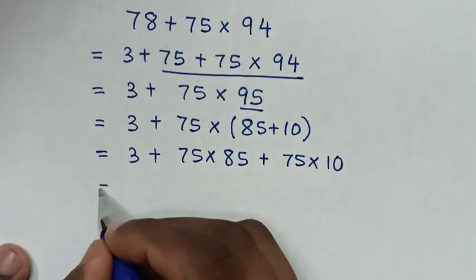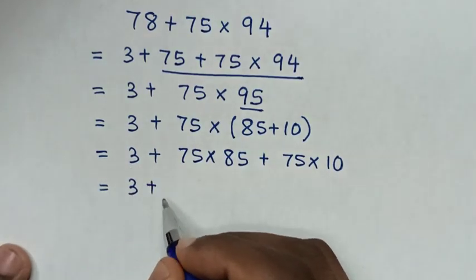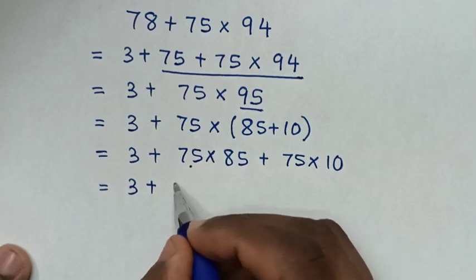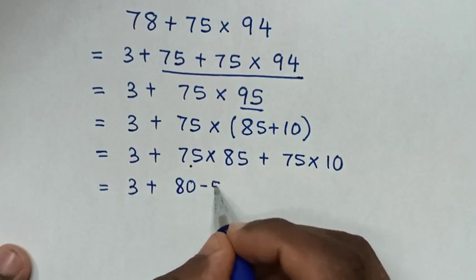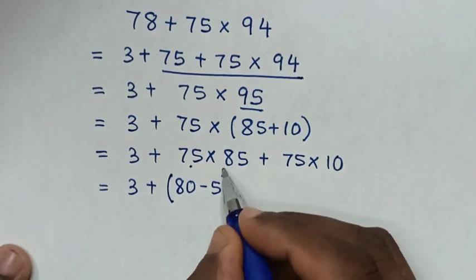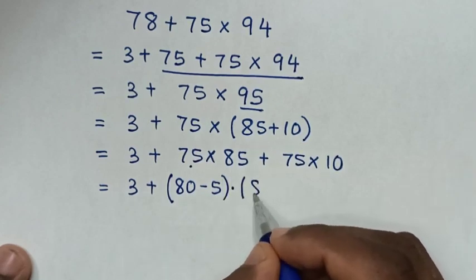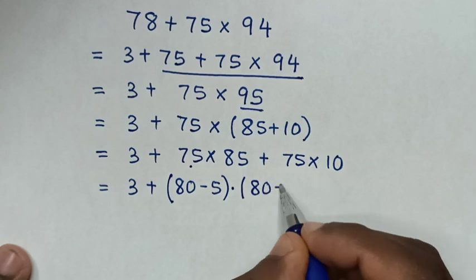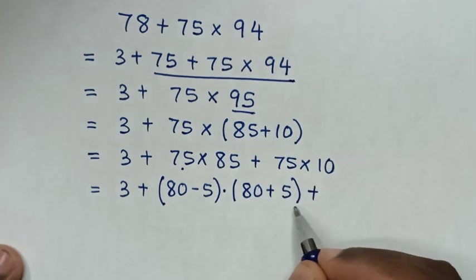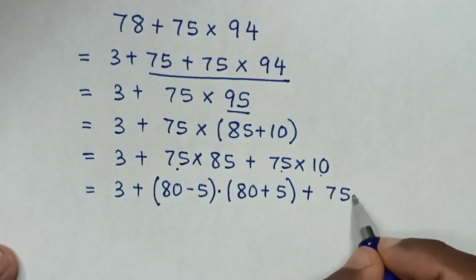Then in the next step it will be equal to 3, then plus 75 times 85, then plus 75 times 10, which is 750.